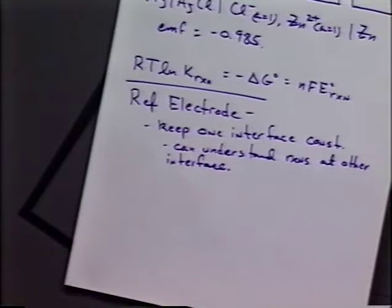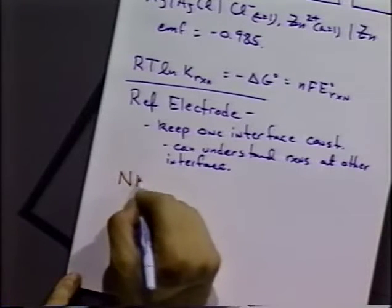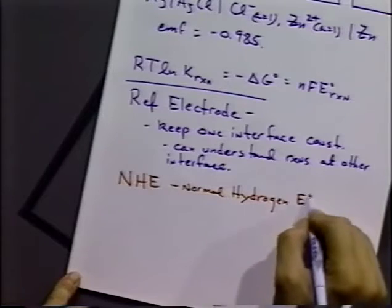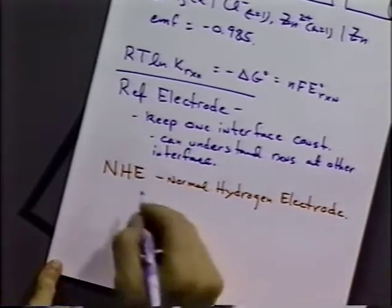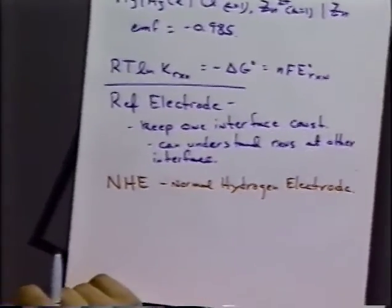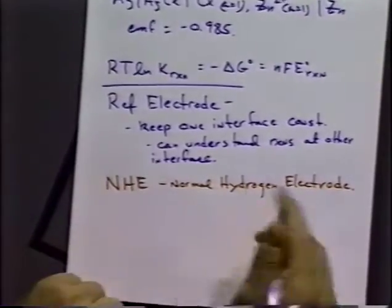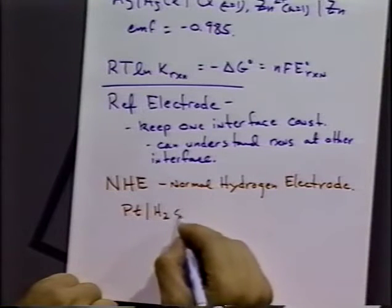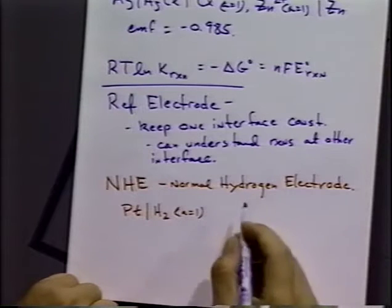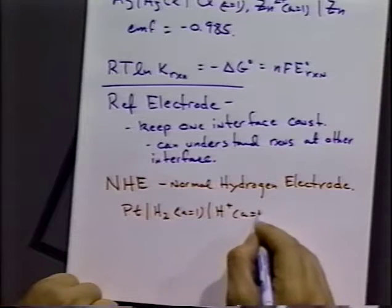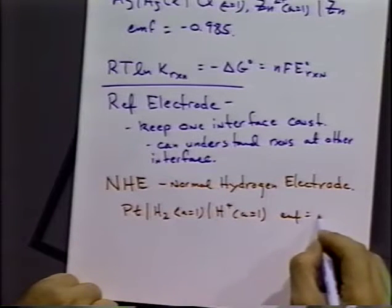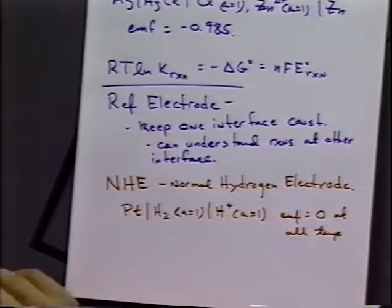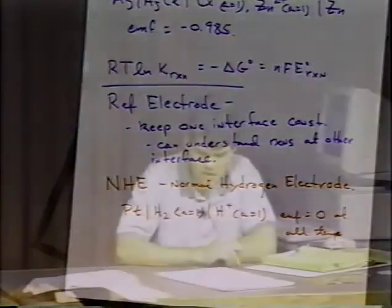The standard cell potential reference is the normal hydrogen electrode, NHE. If you look in the tables of cell potentials in the back of the book, they're always listed versus the NHE. The NHE is physically constructed by a platinum electrode in contact with a solution phase that has unit activity of hydrogen gas and unit activity of hydrogen ions. The EMF of this cell is always considered to be zero at all temperatures, so we can always make that half reaction zero.